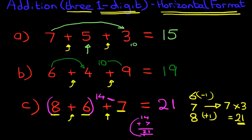So that is how we add three one-digit numbers using the horizontal format. See if you can spot a pattern. If you cannot, then just simply add the numbers one by one.